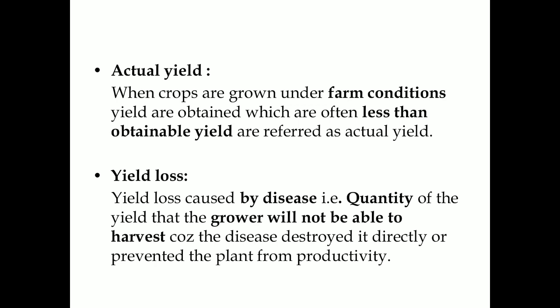Next, that is actual yield. It is the yield obtained that is less than the obtainable or recommended yield from crops which are grown under farm conditions. Next, what is yield loss? It is nothing but reduction in yield in terms of quantity due to pest or disease attack.